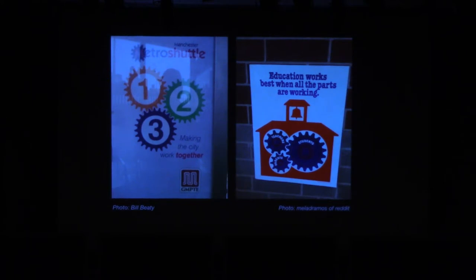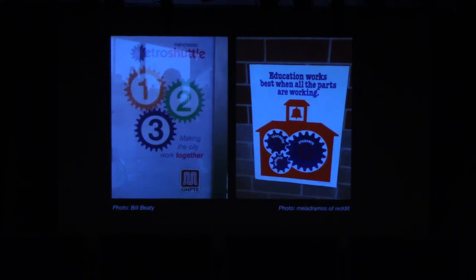I'll tell you where the question came from. There are graphic design elements of three gears meshing with each other — for example in Manchester where three transportation systems were supposed to come together. But if this one's turning this way, that means this one has to be turning this way, which means this one cannot turn. Nothing moves. And over here, the teachers, the students, and the parents come together and nothing is achieved. So the question is: how can you make a system of three gears symmetrically arranged with respect to each other that actually do move? This is one solution.